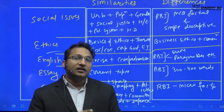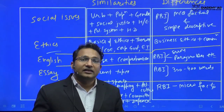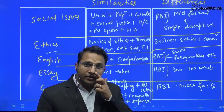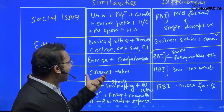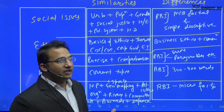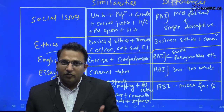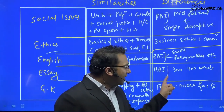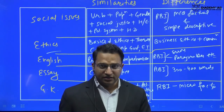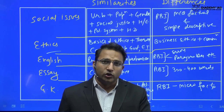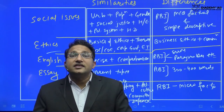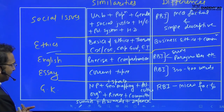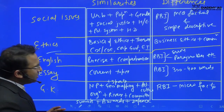Essay is a separate paper in UPSC, whereas in RBI the essay is embedded inside the English paper. The common element is that topics often focus on economy and finance. The difference is that RBI requires a 300–400 word essay, while UPSC requires 1,000–1,200 words — so RBI essays are actually easier.